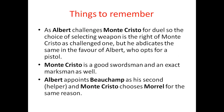As Albert challenged Monte Cristo for the duel, the choice of weapons is Monte Cristo's right as the challenged one, but he abdicates this right in favor of Albert, who opts for a pistol. Monte Cristo is a good swordsman and an excellent marksman. Albert appoints Bouchamp as his second and Monte Cristo chooses Morel for the same purpose.